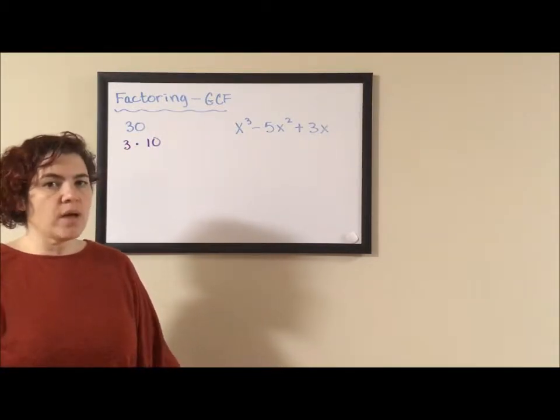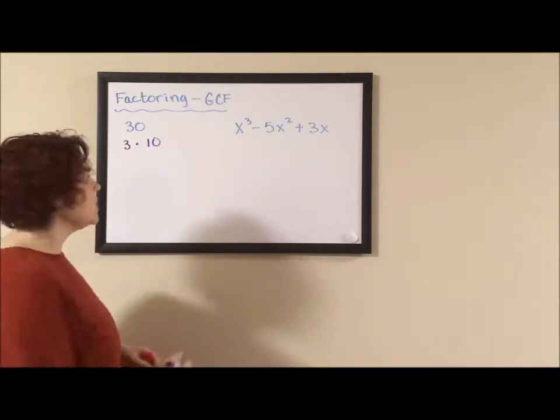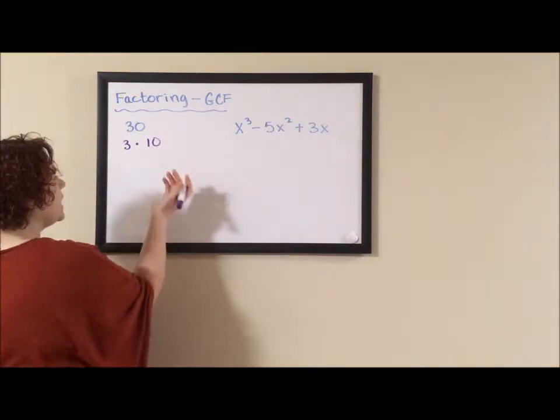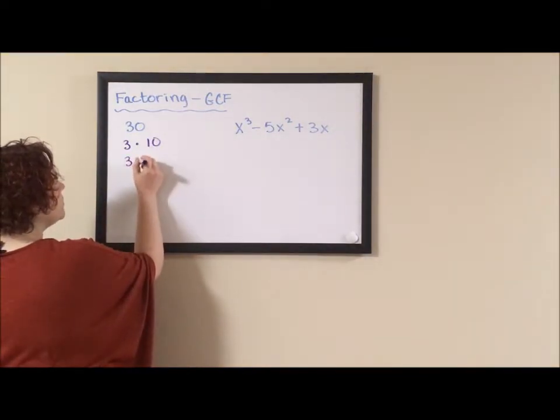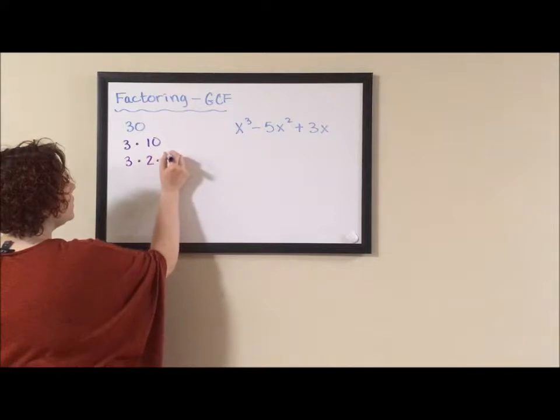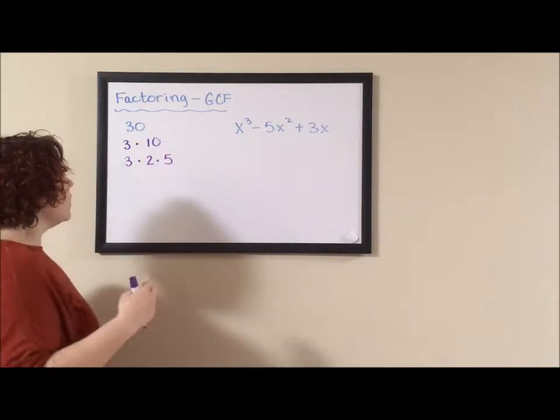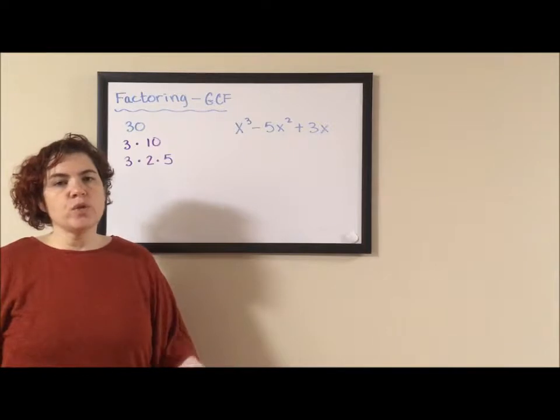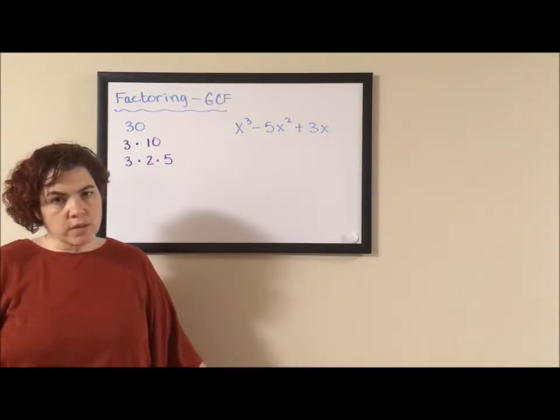10, however, is composite. It's made up of two other primes. If I take 10 and I break it up into 2 times 5, I've now completely broken down 30 into its prime parts.